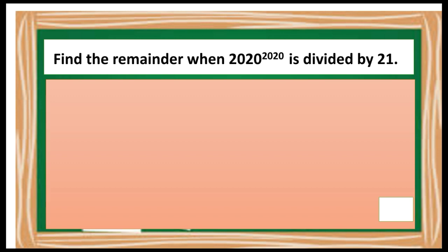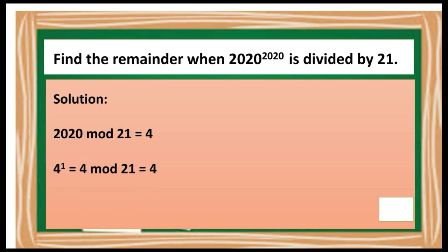Find the remainder when 2020 raised to 2020 is divided by 21. Since the base 2020 is bigger than the divisor 21, the first step is to get 2020 mod 21, which gives a remainder of 4. So we use 4 instead of 2020 and find the cycle. 4 raised to 1 is 4, and 4 mod 21 is 4. Next, 4 raised to 2 is 16, and 16 mod 21 is 16. Then 4 raised to 3 is 64, and 64 mod 21 gives remainder 1, since dividing 64 by 21 gives quotient 3 with remainder 1.